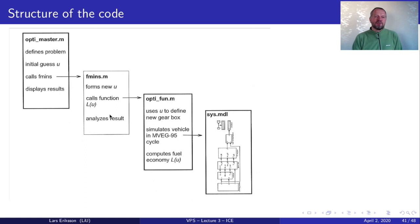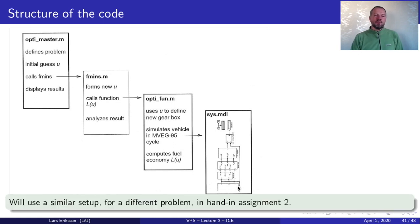And finally it returns result and we display it in your hand in assignment number two. We will use a similar setup like this where you will implement the model down here and you will be provided by the search algorithm that will call your functions that you have developed to evaluate the fuel consumption. And then when the search is finished it will give the results back to you and you will work on displaying the results. So this will be used in hand in assignment number two for you which is the crown jewel of this course.